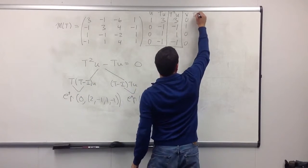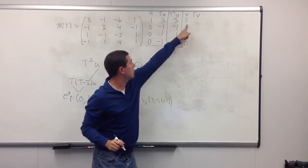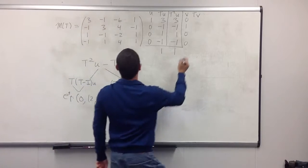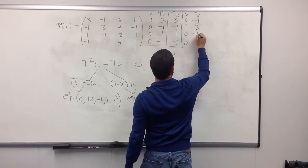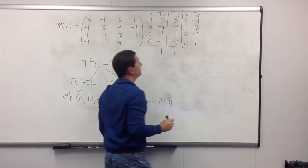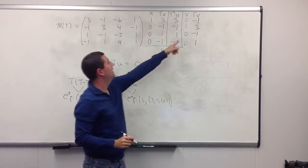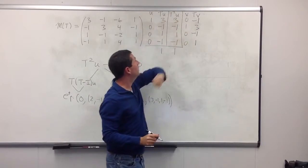So, I apply T to v. And when I apply T to v, well, let's see. Since this just has a one in the second component, it's going to rip out the second column. So, I get negative 1, 3, negative 1, 1. Okay, so now I want to know, can Tv be written as a linear combination of u, Tu, and v? And the answer in this case is going to turn out to be yes.